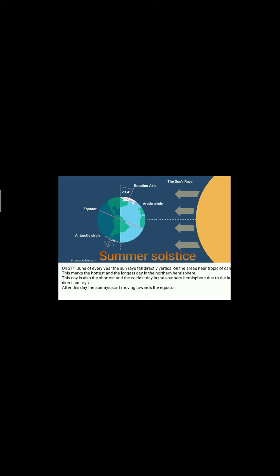On the opposite side, in the southern hemisphere, there are no direct sun rays — only very slanting sun rays. So it will be the shortest day and very cold over there.